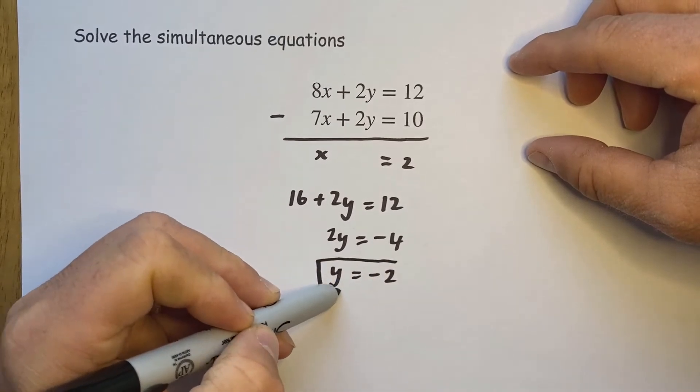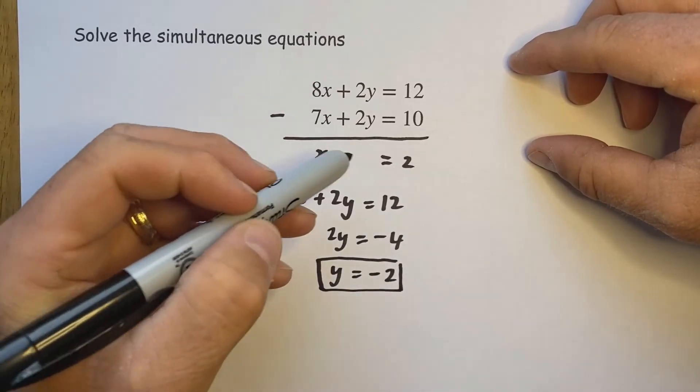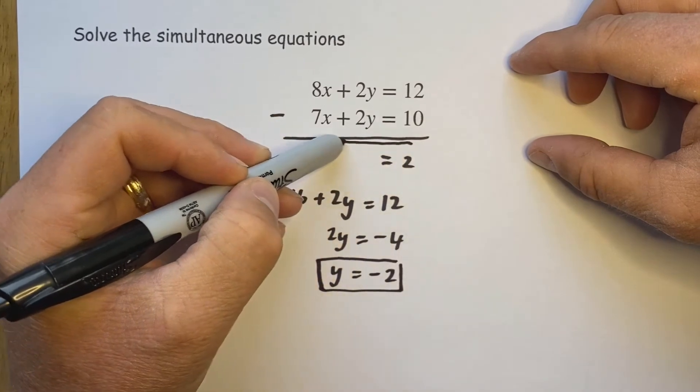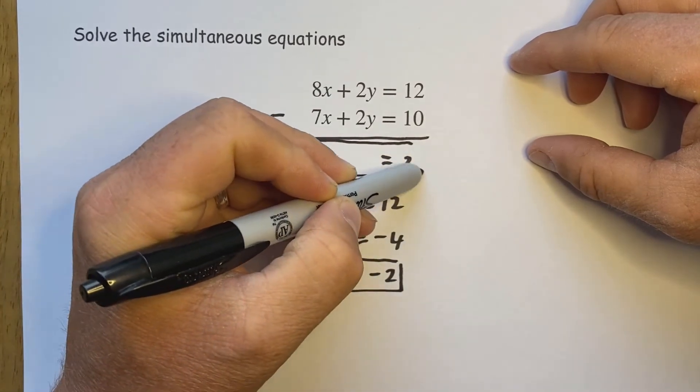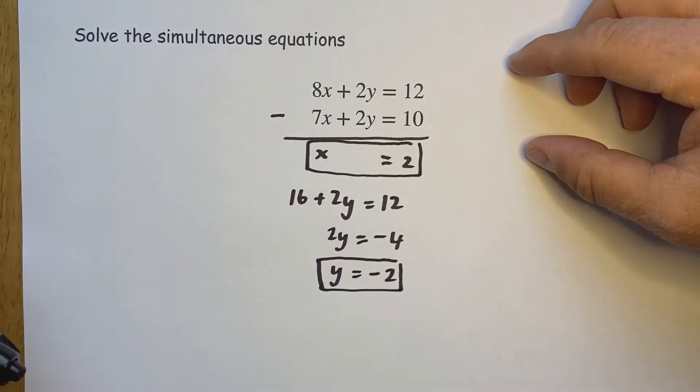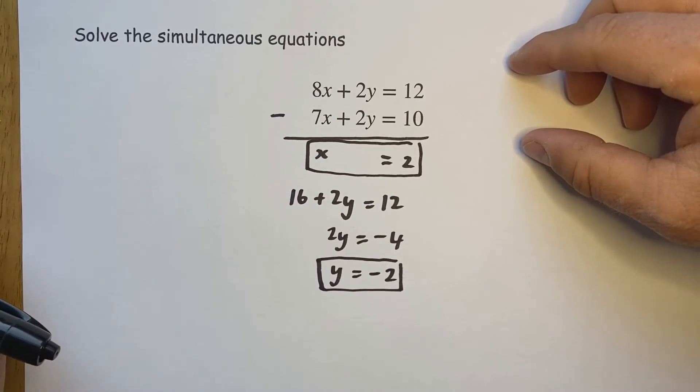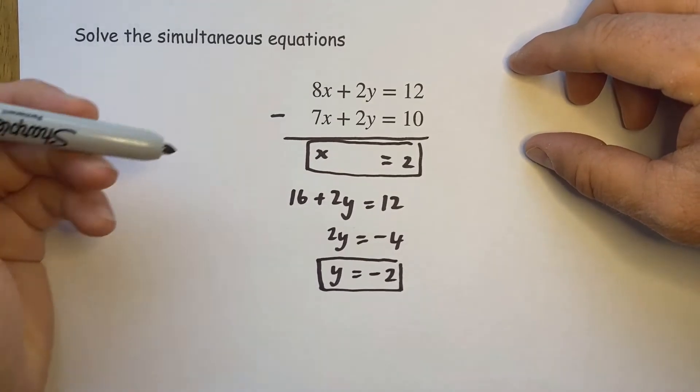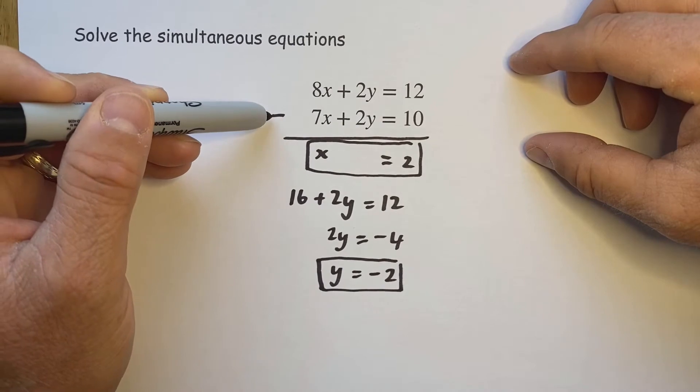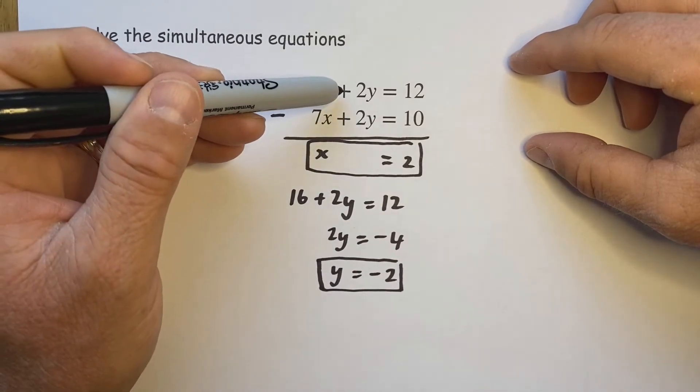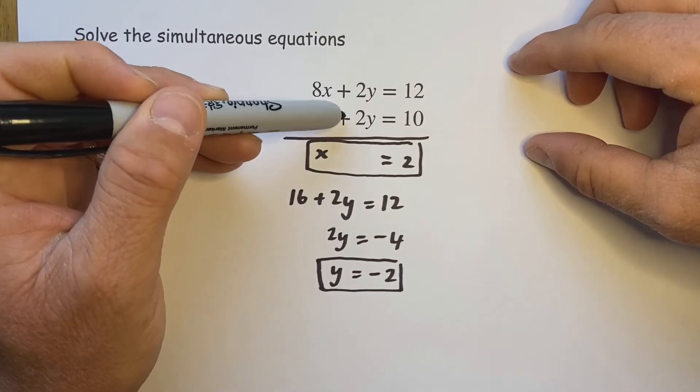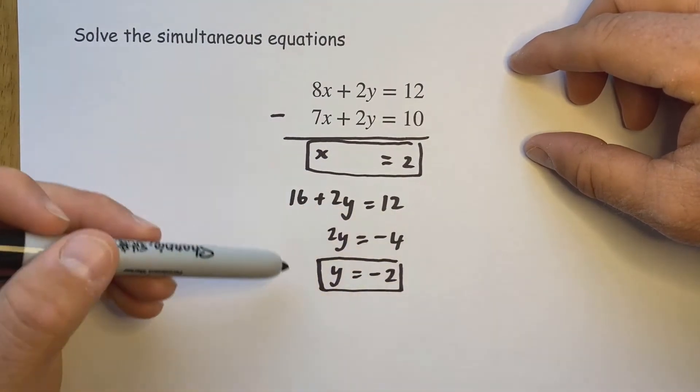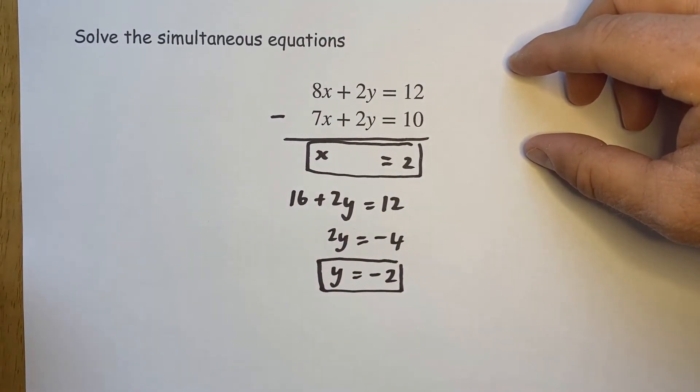So our solution this time is y equals minus 2 and x equals 2. So the only difference between this set of examples and the first lesson is that we subtract the two equations because they are both the same, whereas in the previous we added them. All the rest of the work is identical to the previous lesson.